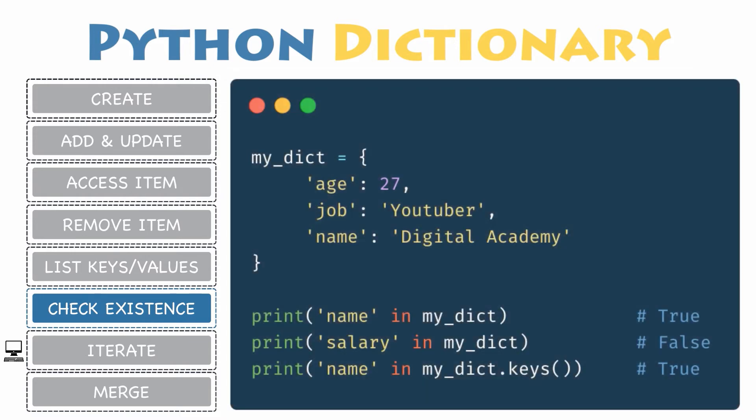First, let's assume you have a dictionary my_dict with the following properties: age, job, and name. Next, you want to check whether the key name is part of this dictionary. Then you will type name in my_dict, which will return the boolean value True since name is present inside the dictionary's keys. Another way to do the exact same thing is to explicitly mention in which part of the dictionary you want to search using the keys function.